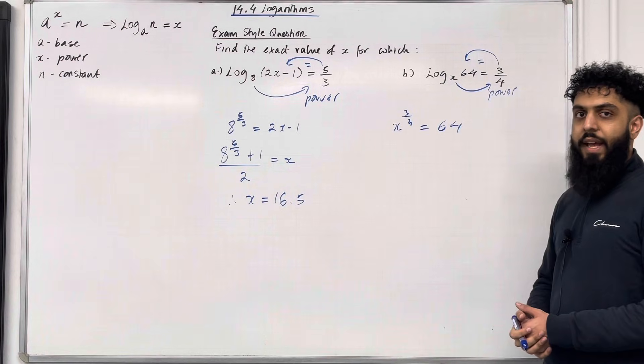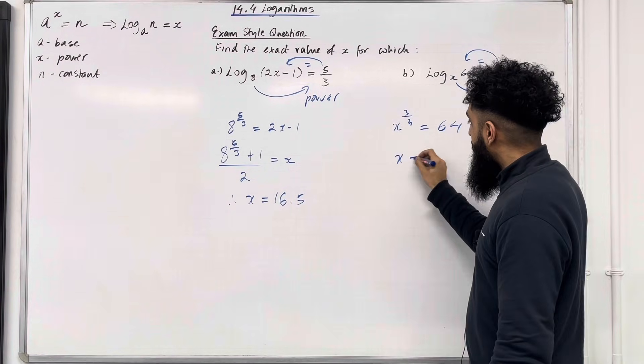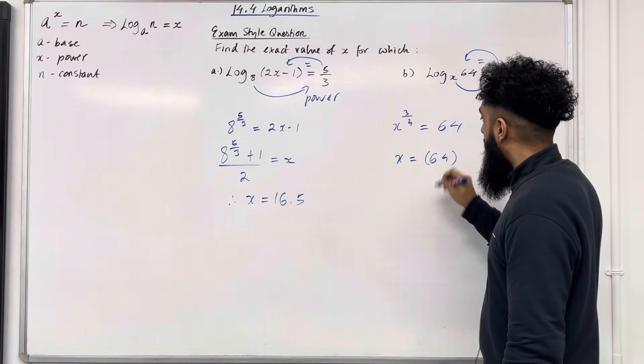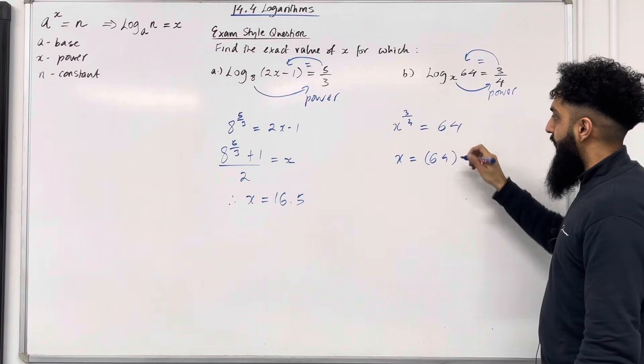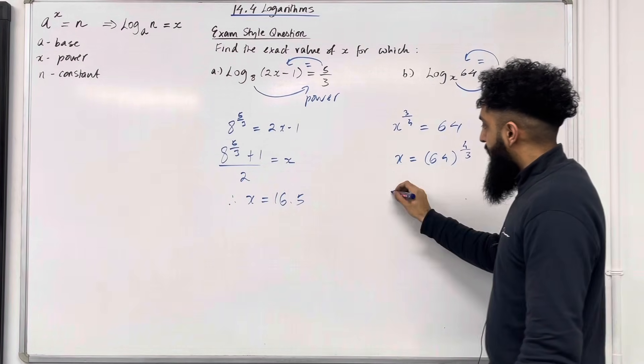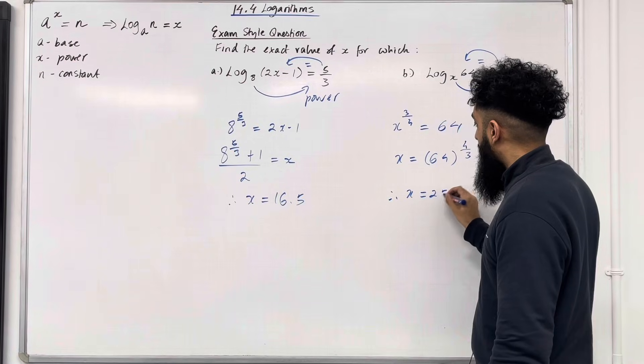Now we can make x the subject. So x is equal 64 to the power reciprocal of 3 over 4 is 4 over 3. Therefore, x is equal 256.